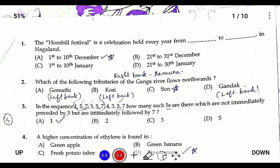Hello everyone. Today I'll be explaining the NPSC 2021 Question Paper Set A, solving from question number one to 100. Please check the answers, and if there's any doubt, please let me know. Let's get the video started. Question number one: the Hornbill Festival is celebrated from the 1st to the 10th of December every year, and it was started in the year 2000.